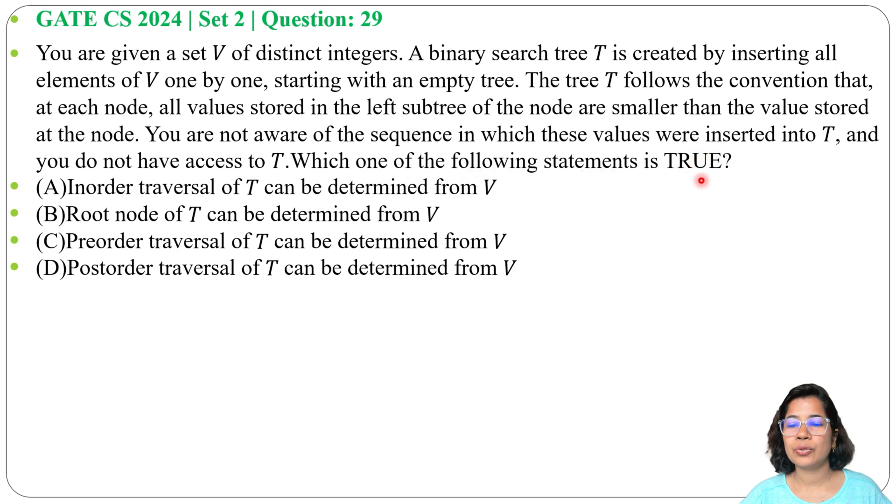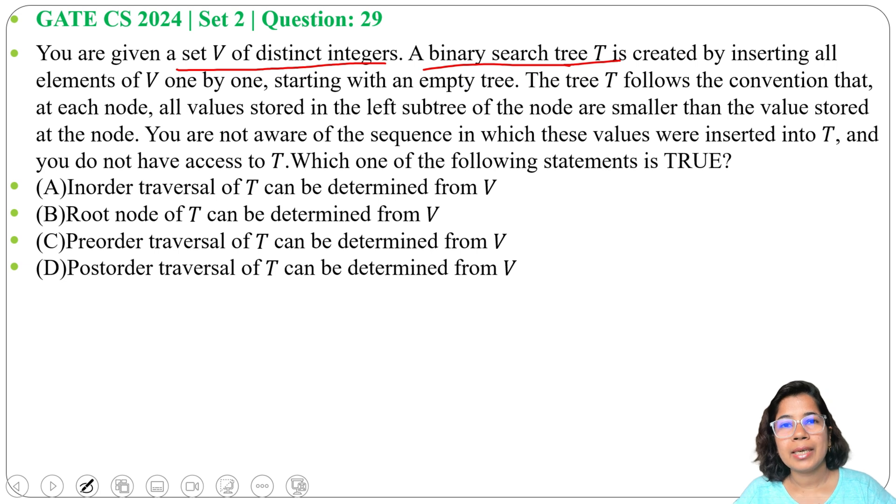which one of the following statements is true? Four options are given. V is a set of distinct integers and T is a binary search tree. In case of binary search tree, left child is less than parent and right child is greater than parent. You can see the value of V but you cannot see the T. Means you have access to the set of integers but you don't have access to T. You cannot see how it is storing in the binary search tree. So from that set of integers, what can you say about this binary search tree?